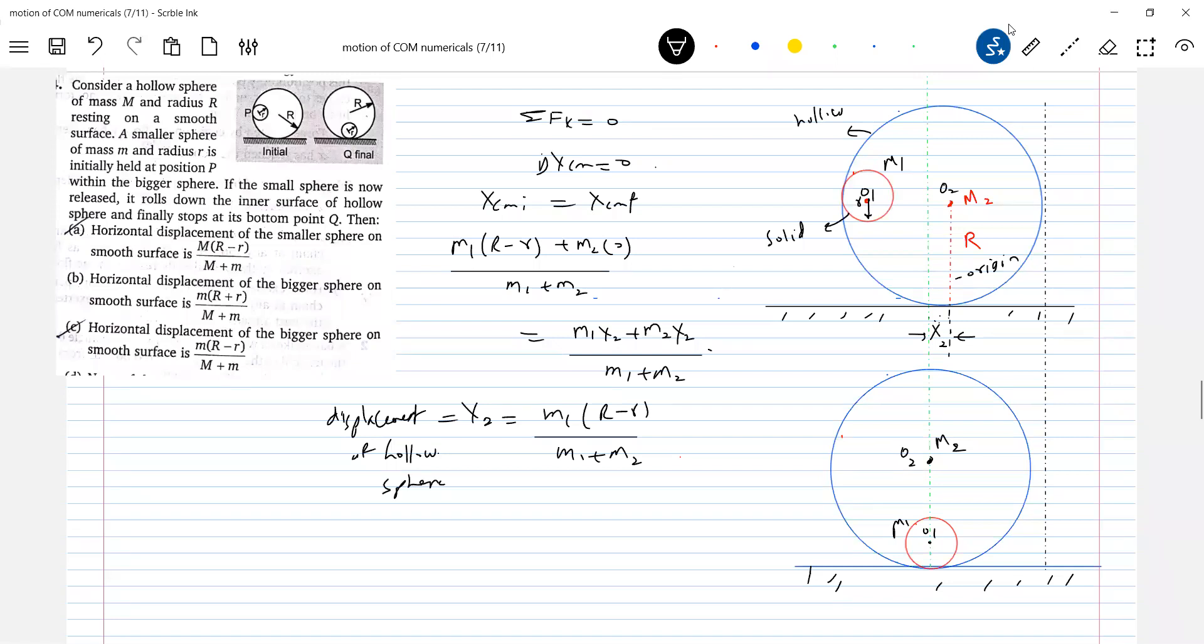How to calculate displacement of smaller sphere? Displacement of solid sphere. Initially at what distance from origin it was? R minus r. And finally it is at a distance of X2 from the origin. So finally it is at a distance X2 and initially at what? R minus r. Substitute value of X2 and solve it to get the required expression.